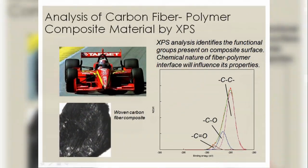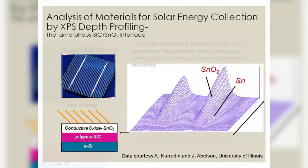Applications of XPS. Analysis of carbon fiber polymer in composite materials by XPS. The XPS analysis identifies the functional groups present on composite surface and the chemical nature of fiber-polymer interface, which influences its properties. This can be very helpful in making the tires of F1 racing cars.